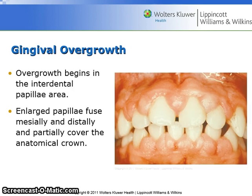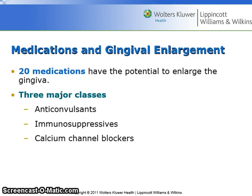Gingival overgrowth begins in the interdental papilla area. Enlarged papilla fuse mesially and distally and partially cover the anatomical crown. There are 20 medications that have the potential to enlarge the gingiva. The three major classes are anticonvulsants, immunosuppressives, and calcium channel blockers.